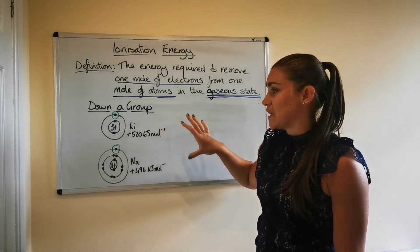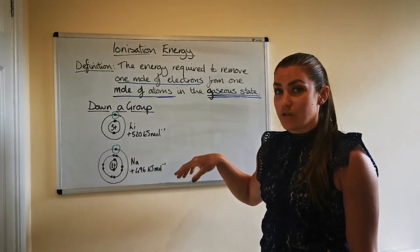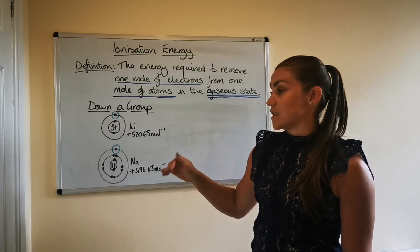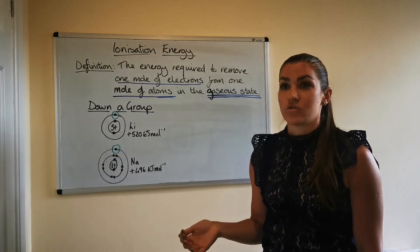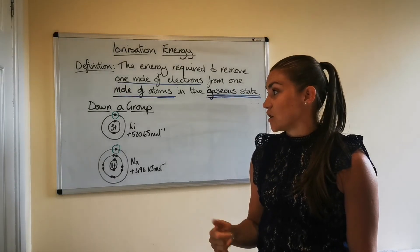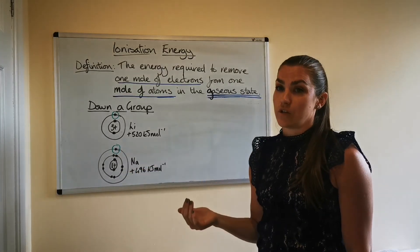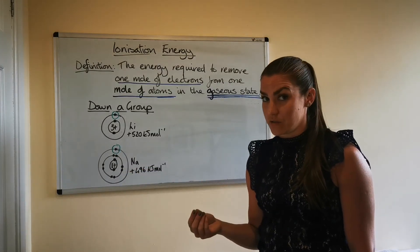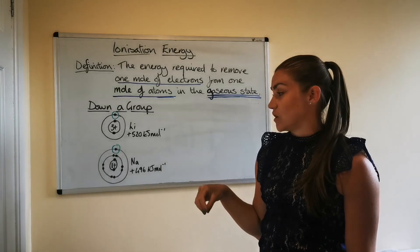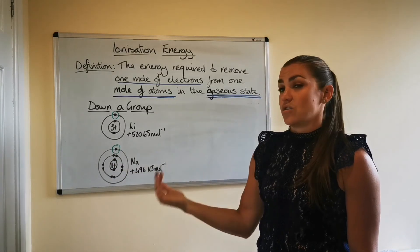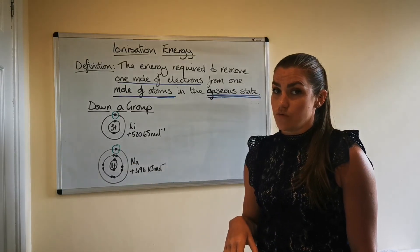Okay, so when we're explaining the trend in ionization energy going down a group, you're really looking to explain how increasing numbers of occupied energy levels causes an increased shielding effect. So less energy is required to remove the outer electrons because they're less tightly held. Because that nuclear charge attraction has been decreased, there's not as much of an attraction for the outer electron you're trying to remove.